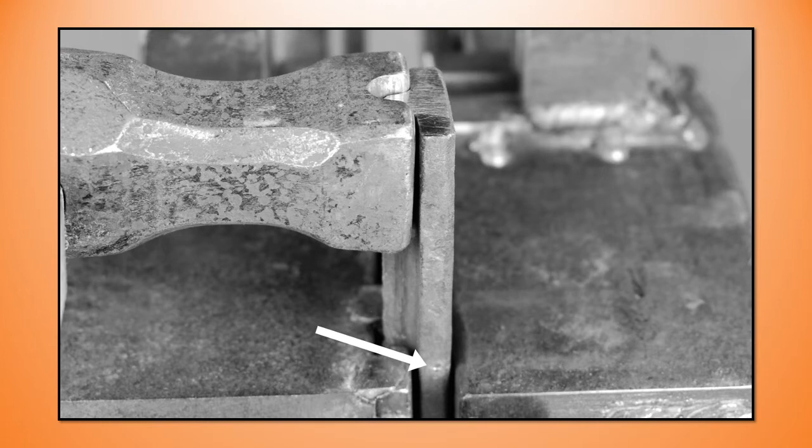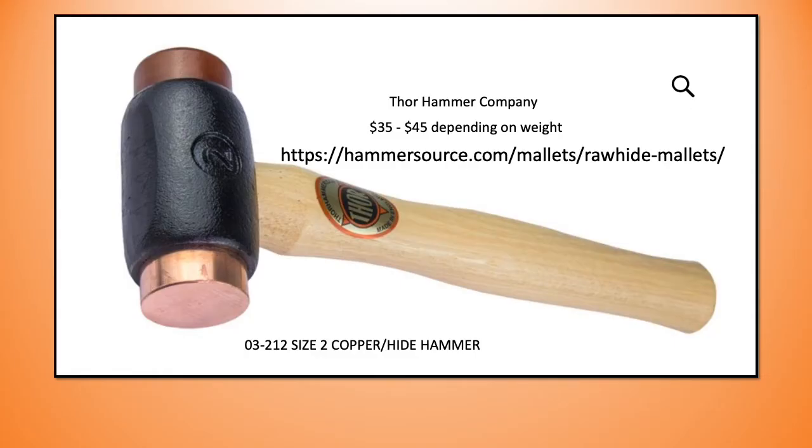You can see here that my center punch mark is about half the thickness of the back strap above the jig. And I'm showing the use of a set hammer to make my first bend. But a hide mallet or a wooden mallet would work equally as well. In fact, my method of choice is to use a hide mallet. Actually a combo hide and copper mallet. This is a hammer by Thor company. It's got a hide surface and a copper surface. You're going to get those $35 to $45 depending on the weight you get. Size two is the obvious choice.